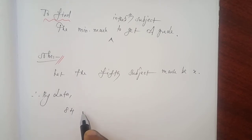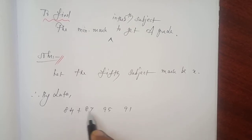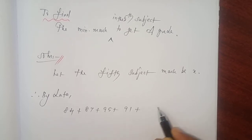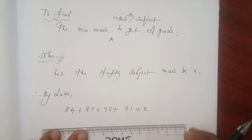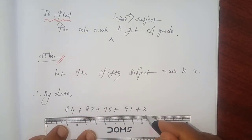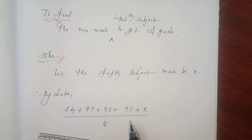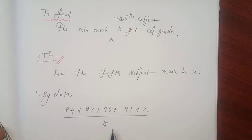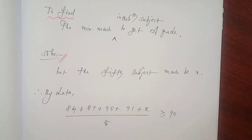Add everything, including that 5th subject, X. How many subjects totally? 5 subjects. So, divided by 5 for getting that average. If we divide by 5, we will be getting the average mark. The average mark for getting that A grade should be greater than or equal to 90, according to the question.